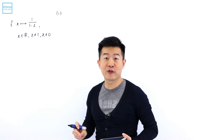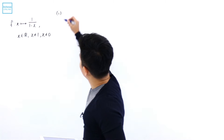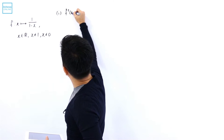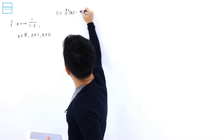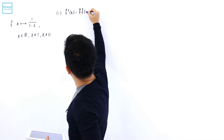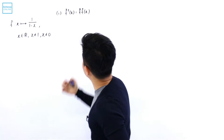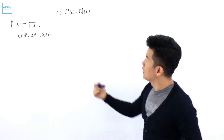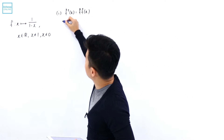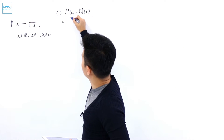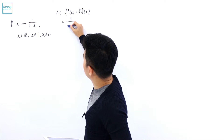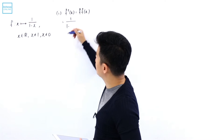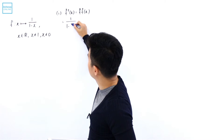Let's take a look at f²(x). For f²(x), it is viewed as f(f(x)) — a composite function of f going into f — which means that the expression 1 over (1 minus x) is going to be replaced by the expression for f(x).